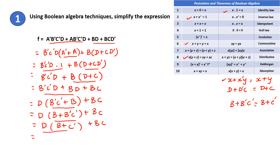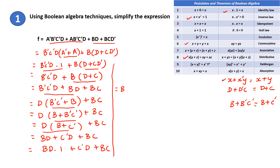Now apply the distributive law to this. So we get BD plus C'D plus BC. You can still simplify this expression. Write BD into 1 plus C'D plus BC. That equals BD times (C plus C'), since C plus C' is 1, plus C'D plus BC.